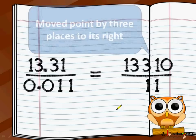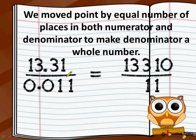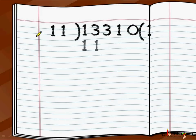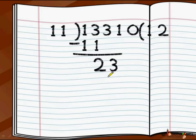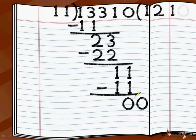Now the divisor has no decimal point, so we can do a simple division. 13310 divided by 11: 11 ones are 11; 13 minus 11 is 2; bring 3 down — 23; 11 twos are 22; 23 minus 22 is 1; bring 1 down — 11; 11 ones are 11; remainder is 0. So the final answer is 1210.